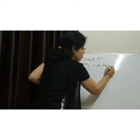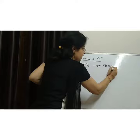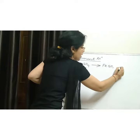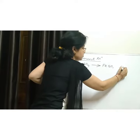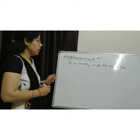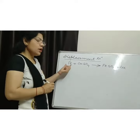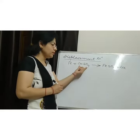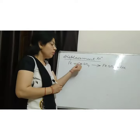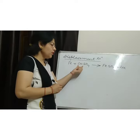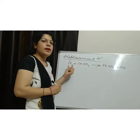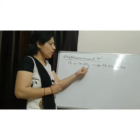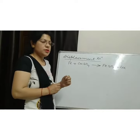It forms Ferrous Sulphate along with Copper. Because Iron is more reactive than Copper, therefore it can easily displace Copper from Copper Sulphate.